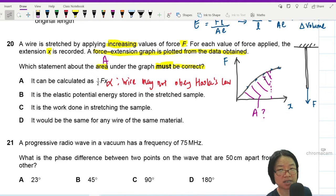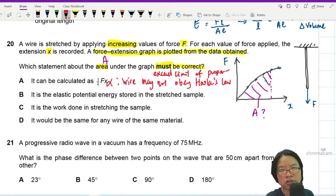The area may exceed, exceed your limit of proportionality. So these are reasons why the area may not be half Fx.